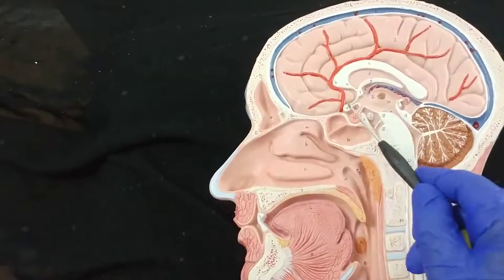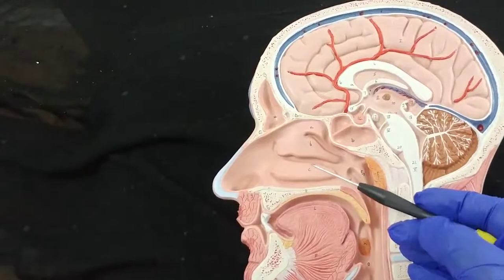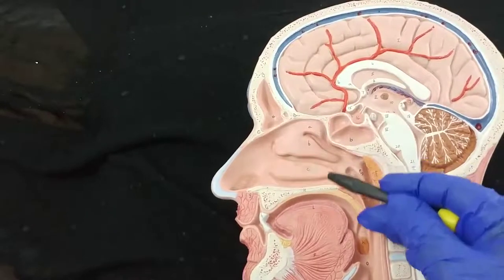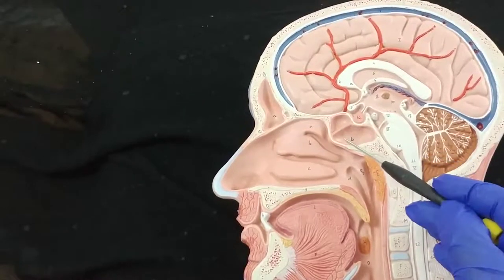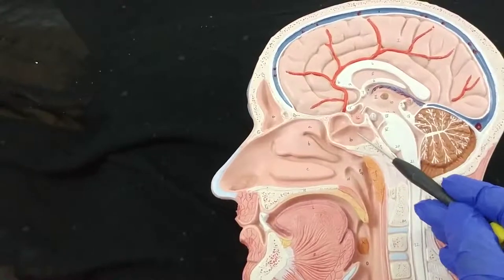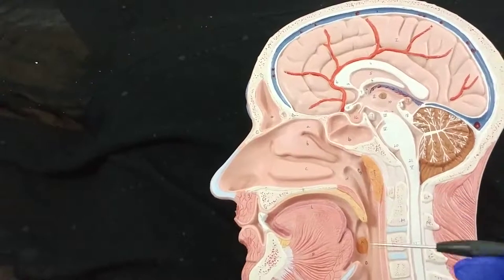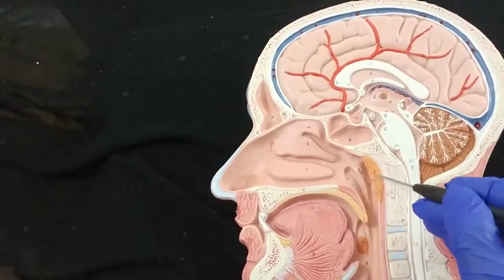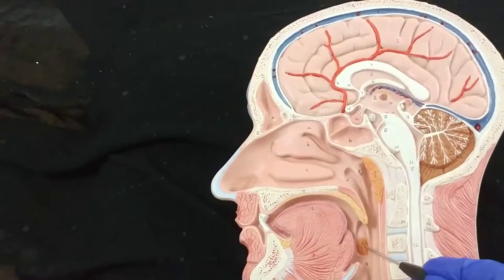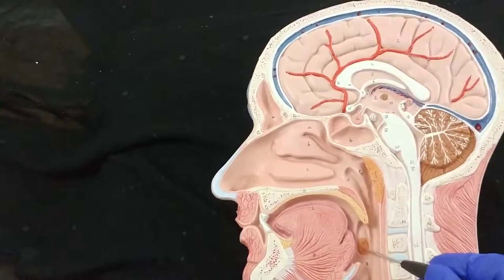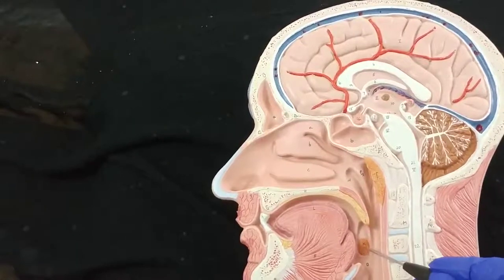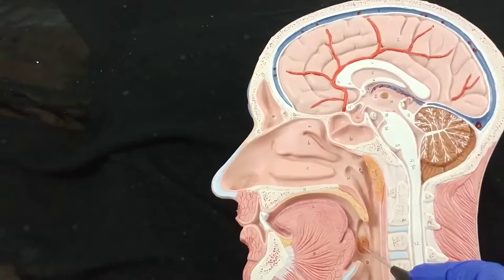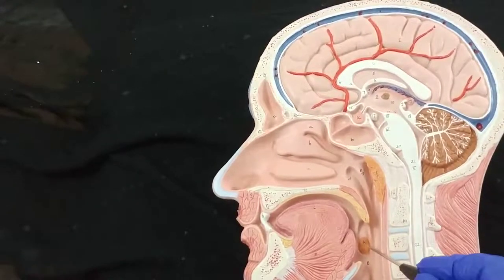We have the frontal sinus, the sphenoidal sinus, and on the other side the maxillary sinus and ethmoidal air cells. They lighten the skull, and the sinuses maintain air conditioning inside the nasal cavity. They are essential to produce good articulation by adding resonance to the voice, and they keep the nasal cavity moist. Waldeyer's ring of tonsil is composed of the palatine tonsil, the lingual tonsil, the pharyngeal tonsil, and the tubal tonsil. Regarding the blood supply of the tonsil, the most important is the tonsillar branch of the facial artery. It also receives the ascending pharyngeal artery and the dorsal lingual artery.